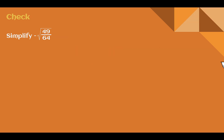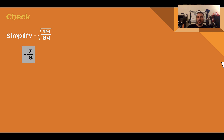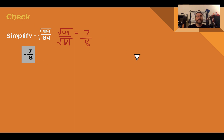Check your understanding: simplify negative square root of 49 over 64. Pause the video and complete the check. You should have said negative 7 eighths. The square root of 49 is 7, the square root of 64 is 8, so there's your 7 eighths — stick the negative out front: negative 7 eighths.